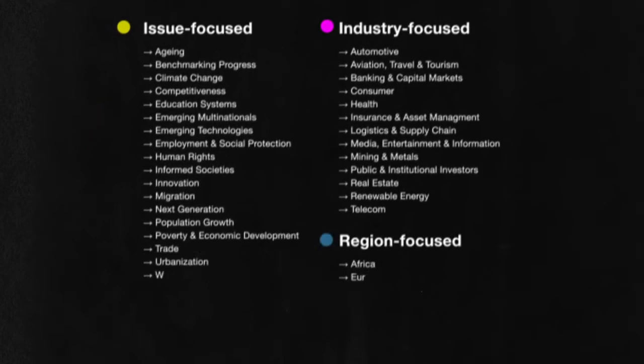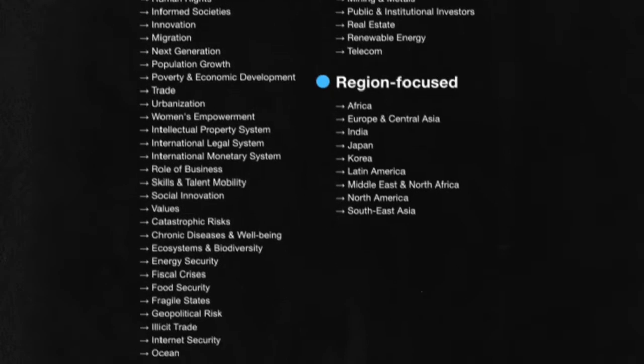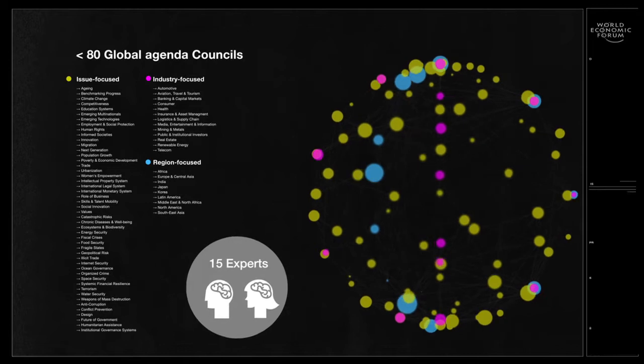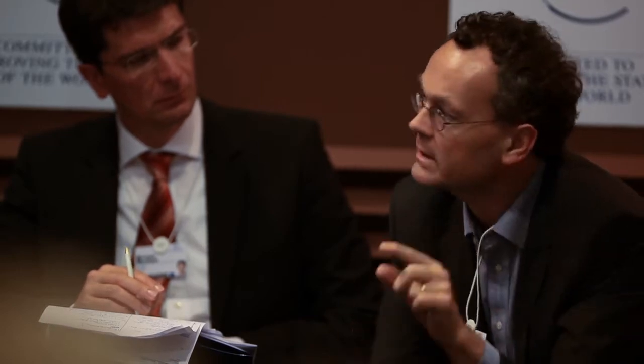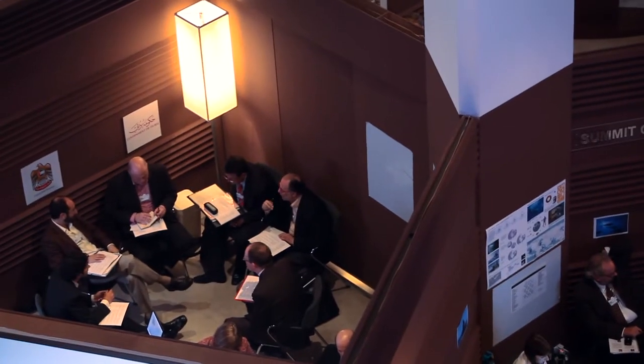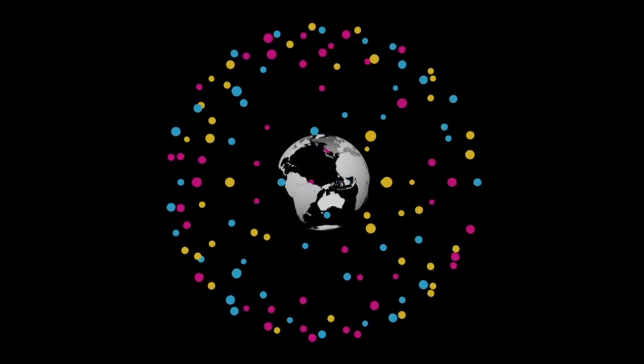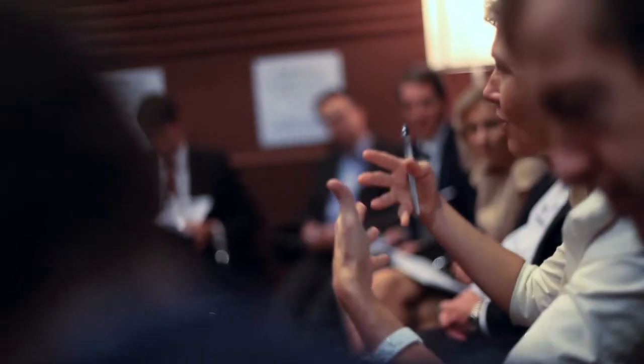There's about 80 Global Agenda Councils. Each one has its own issue and brings together about 15 experts drawn from companies, governments, academia. The Global Agenda Council is a fascinating collection of people, really bright minds. The world's smartest thinkers and experts from around the world, from different regions, different stakeholder groups.